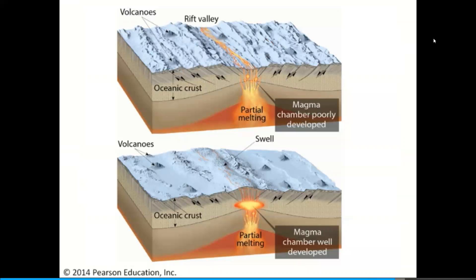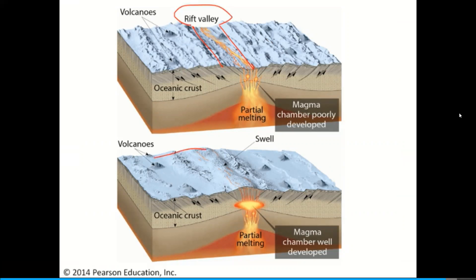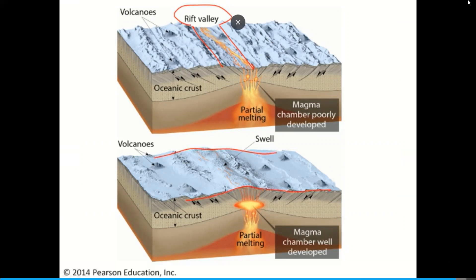Time to test yourself: the two examples shown represent different spreading rates — which is fast and which is slow? The well-developed rift valley at the top indicates slow seafloor spreading, like the modern-day Atlantic Ocean. The well-developed swell at the bottom indicates fast seafloor spreading, like the East Pacific Rise.